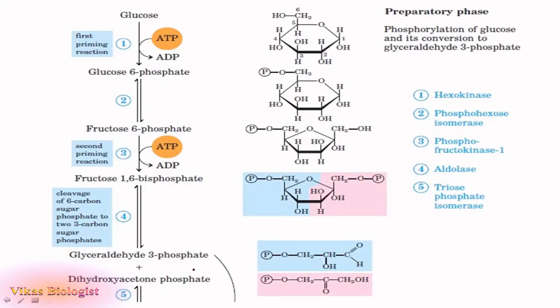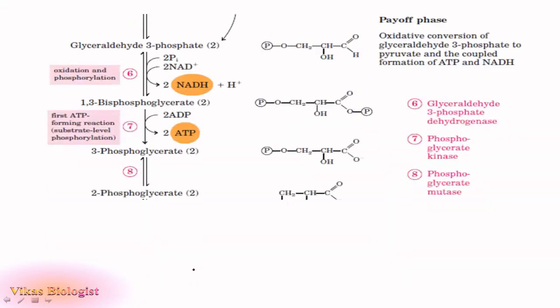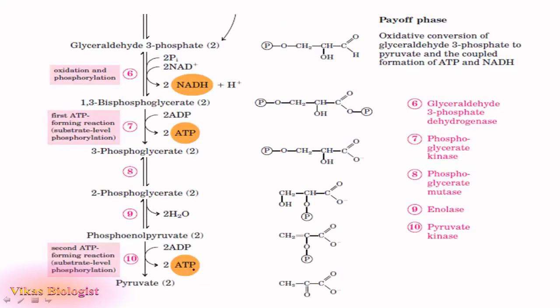After this, glycolysis enters the payoff phase which begins with glyceraldehyde 3-phosphate. In the preparatory phase you now have two molecules of glyceraldehyde 3-phosphate. This glyceraldehyde 3-phosphate undergoes oxidation and phosphorylation in presence of the enzyme glyceraldehyde 3-phosphate dehydrogenase where NADH is produced. 1,3-biphosphoglycerate that is formed during this reaction is now converted to 3-phosphoglycerate which involves the production of ATP. This is the step where the first ATP forms and hence this is referred to as substrate level phosphorylation.